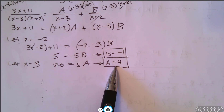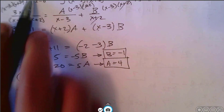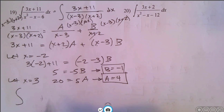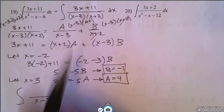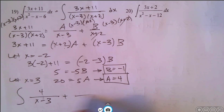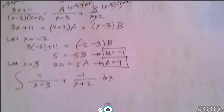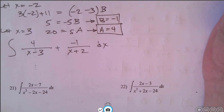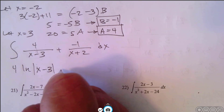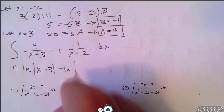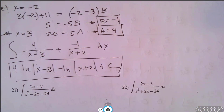Now we know what the numerators are. For a we put 4, and for b we put negative 1. So we can rewrite our integral split into two fractions: 4 over x minus 3 plus negative 1 over x plus 2, dx. Taking the antiderivative: that's going to be 4 natural log of the absolute value of x minus 3, minus natural log of x plus 2, plus c. And we've got our answer.